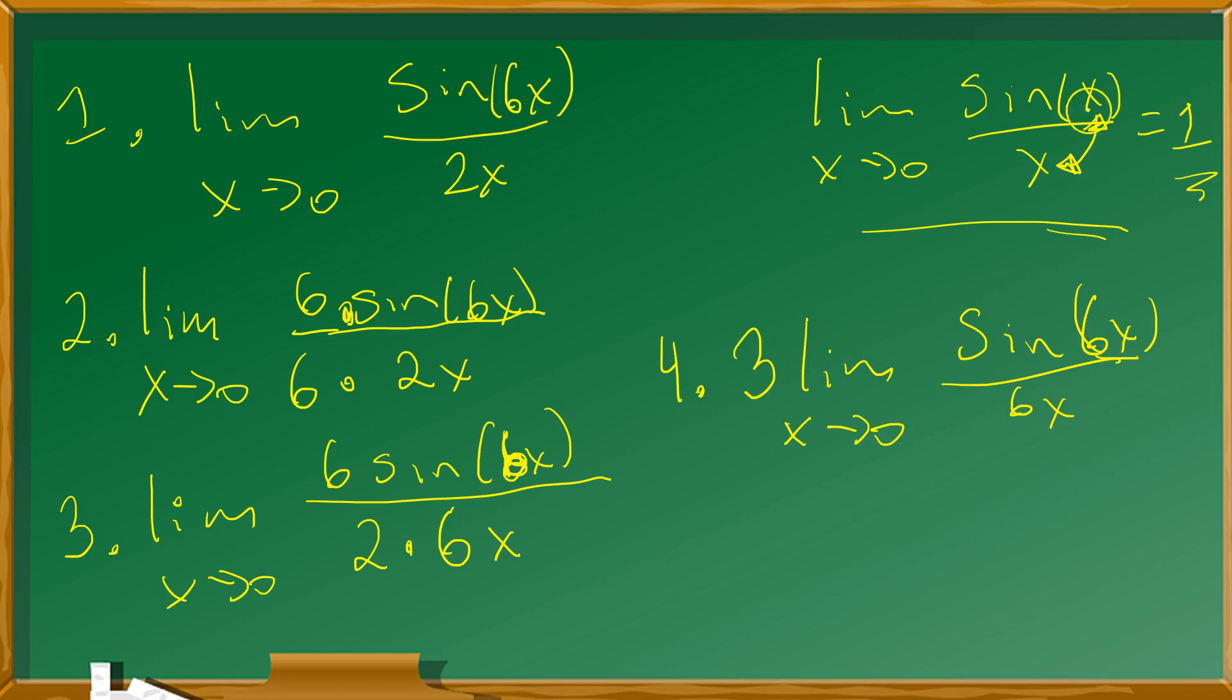The fact that this is 6, and up there it's just like 1x for example, makes no difference. They just have to be the same looking. So that means you're going to end up with 3 times 1, which is 3. And that is the correct value of the limit.